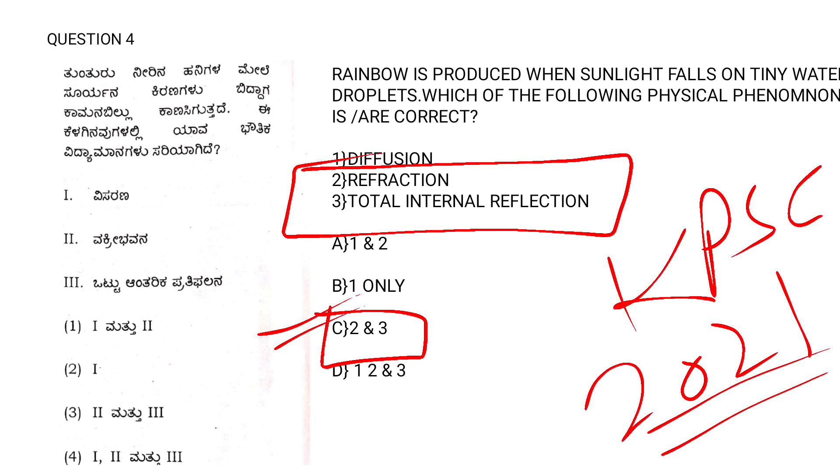You can also read the question in Kannada. You can pause the video, read the question, and get back to the answer. Now we can see the detailed explanation: what are the physical phenomena that happen during the rainbow formation?